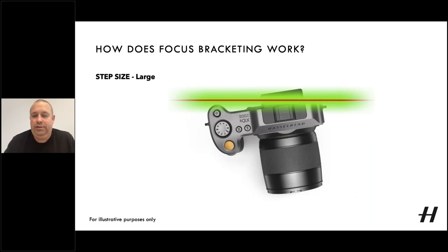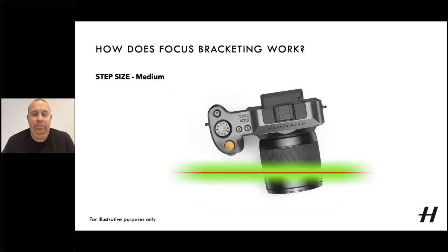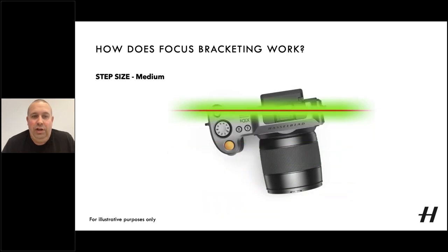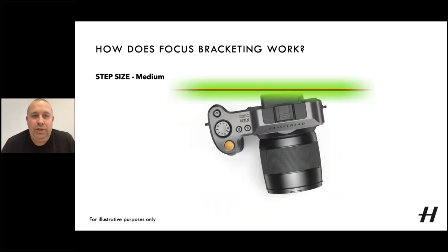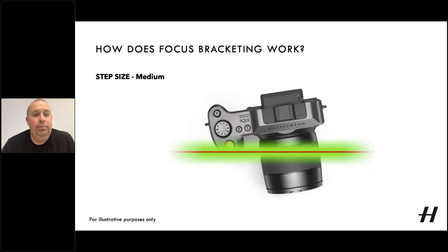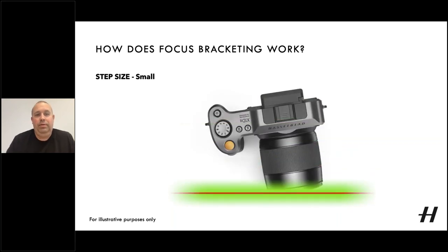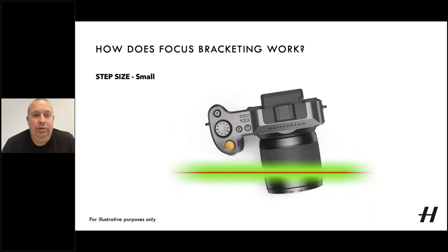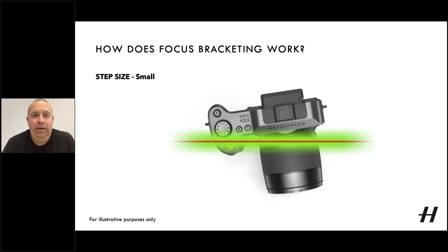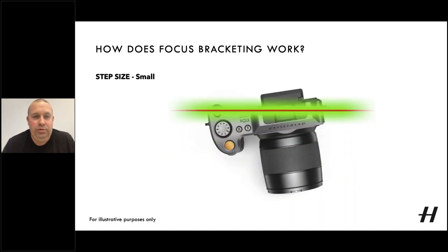Looking at what we're talking about with step size — with the large step size in this particular example, the green depth of field area is not overlapping, so there are sections of the subject between each step that aren't being captured in focus. With a medium step, the green areas are only just overlapping, so we could probably get away with this. But alternatively, and probably the best option, is small, where the green depth of field is definitely overlapping and therefore providing focus along the whole subject.